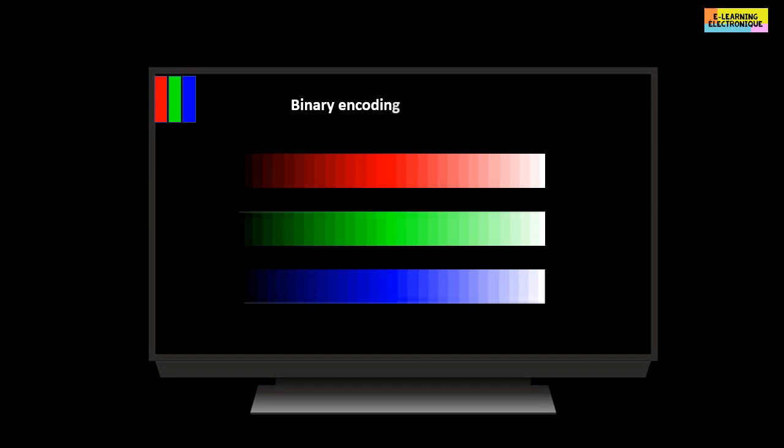If the coding uses 8 bits, each subpixel can take a value between 0 and 255. For example, to obtain the color plum in decimal coding,